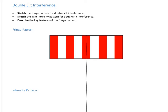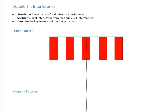The double slit, or Young's interference, has its own fringe pattern. It's governed by the equation W = λD/S, where W is the fringe spacing — the distance between the centres of adjacent peaks — D is the distance between the slit and the screen, λ is the wavelength, and S is the distance between the slits.